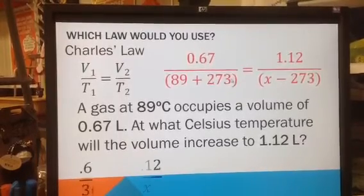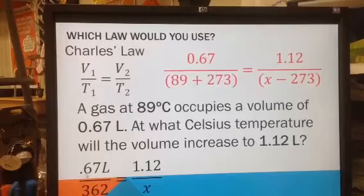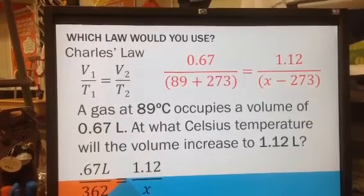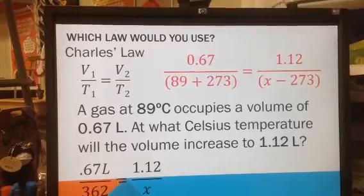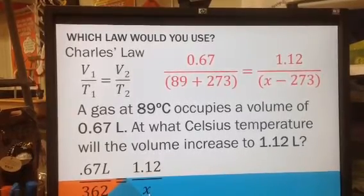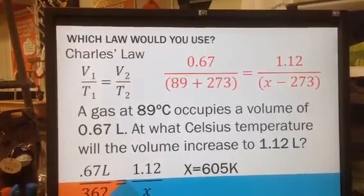So in this problem, I would have 0.67 over 362—that's what these two numbers added together is—equals 1.12 over X. When I solve for X, I get 605 Kelvin.